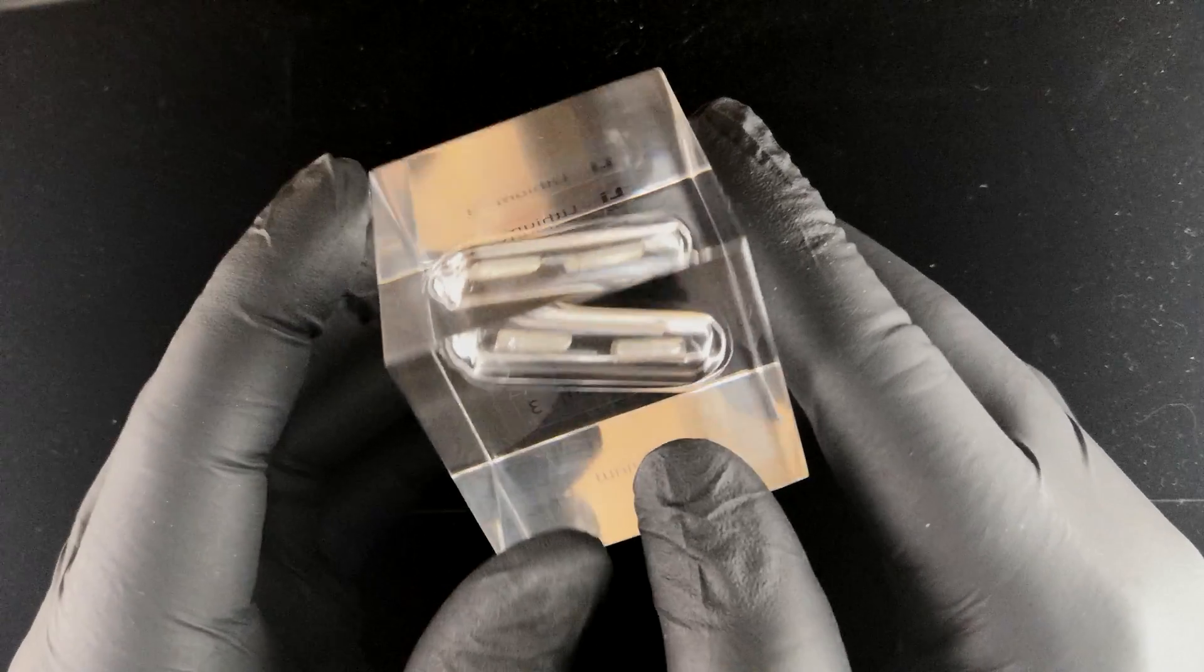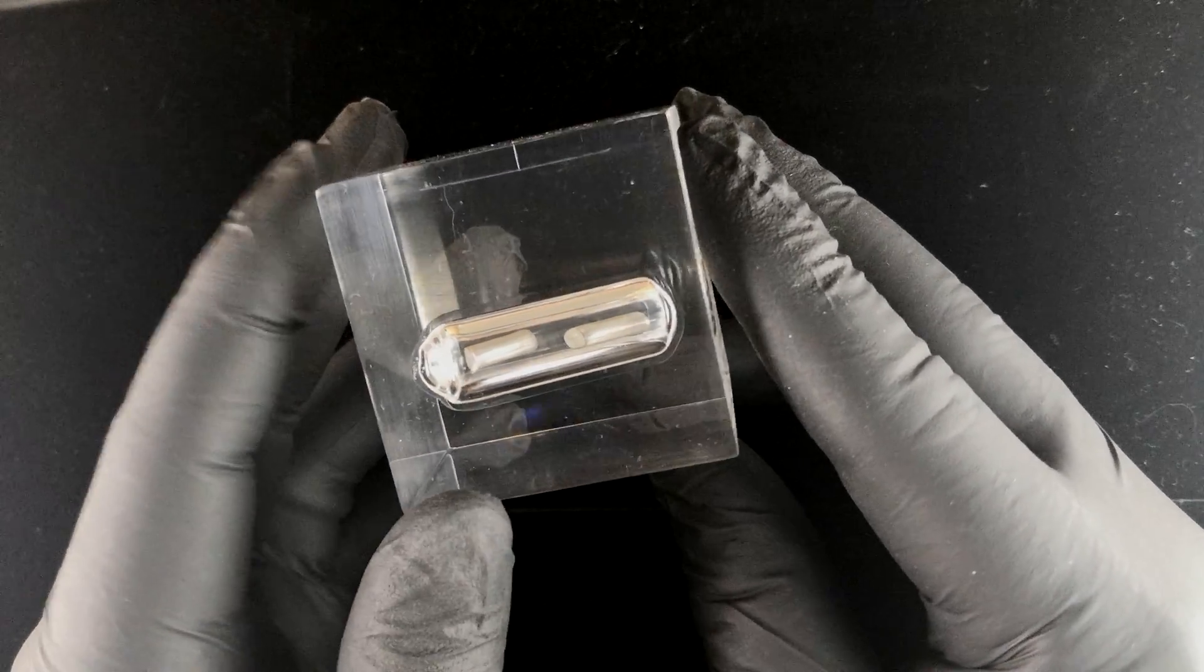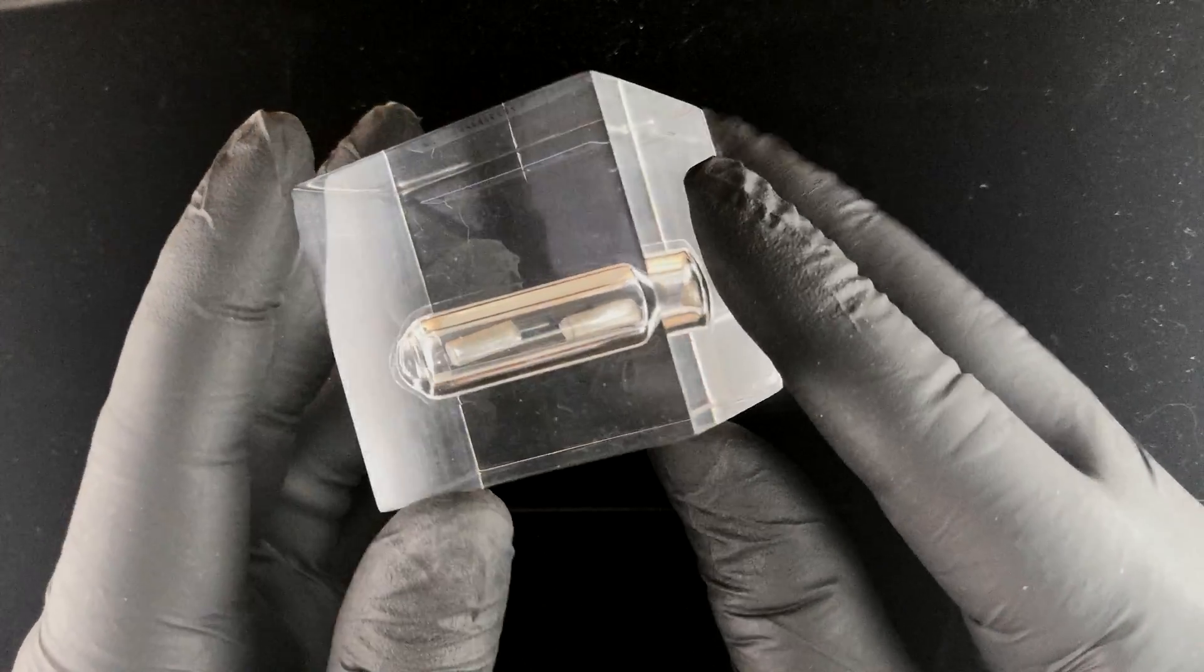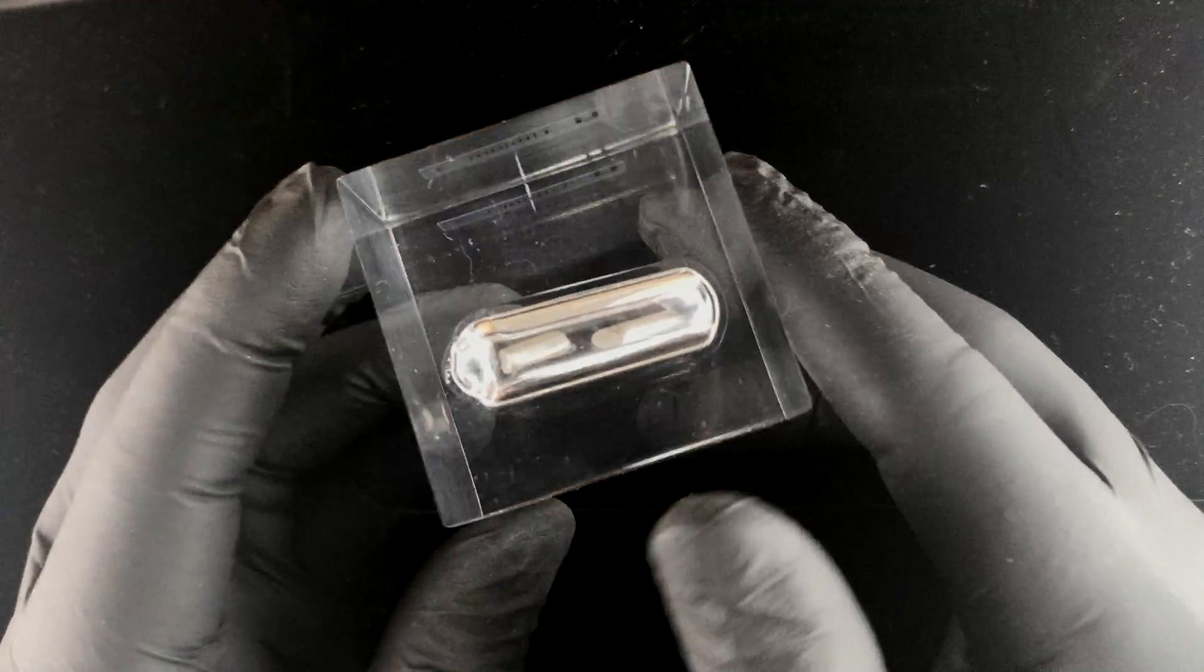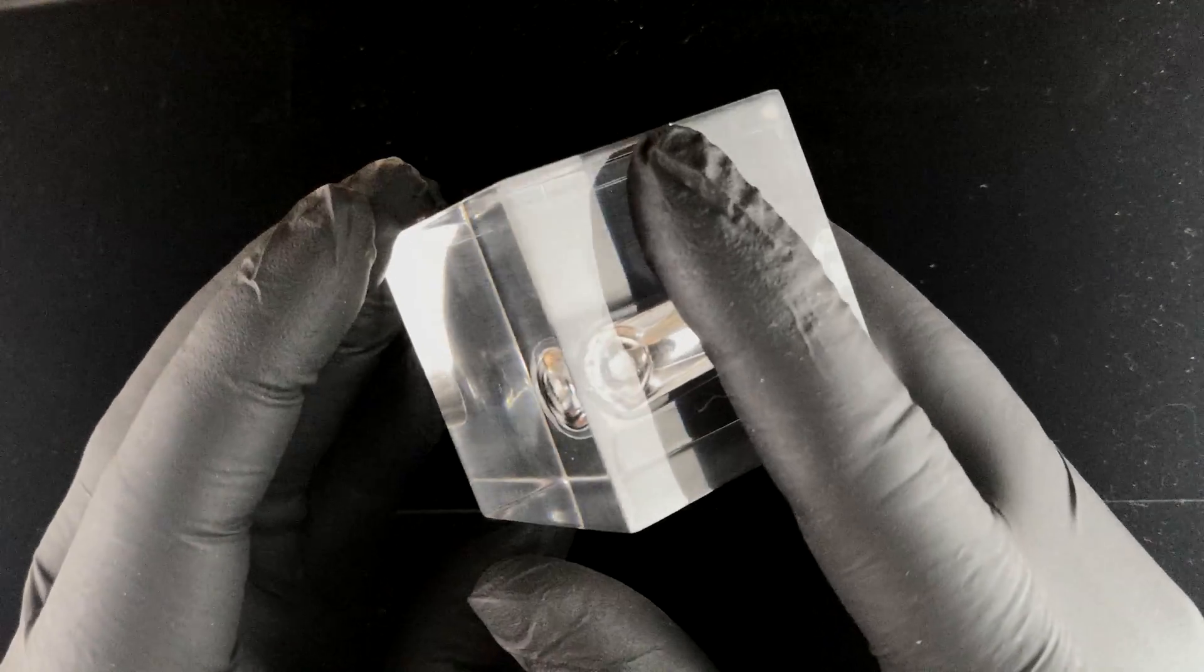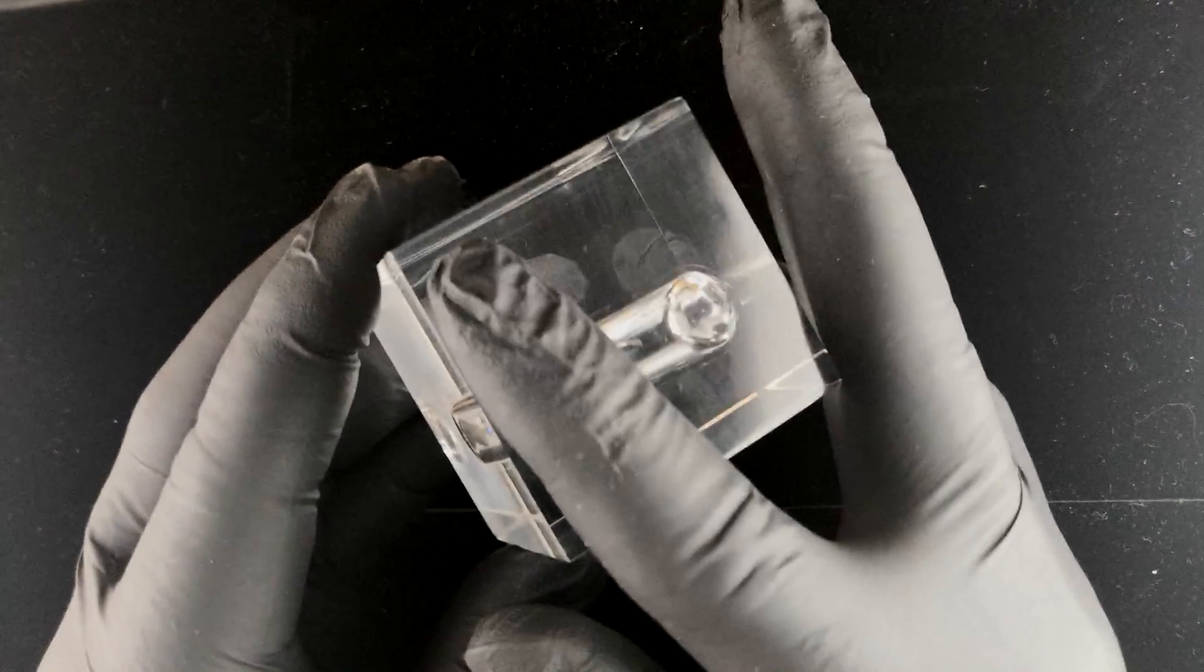But nobody ever really gets to see what the metal looks like because it's tied up in batteries. Most batteries are lithium ion. So if you took apart the battery, all you'd see is some goo in there and not the actual metal.